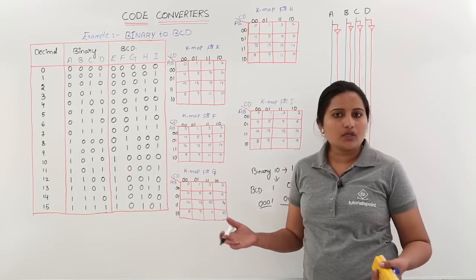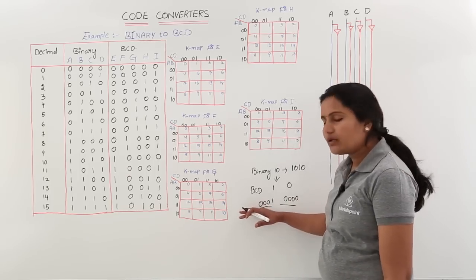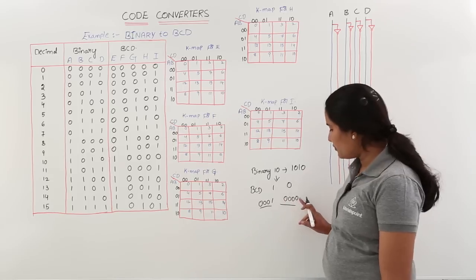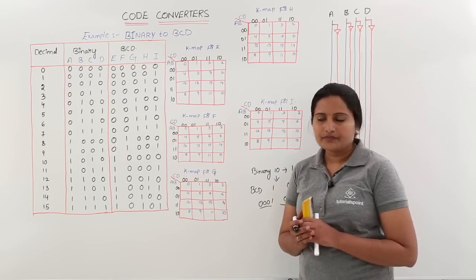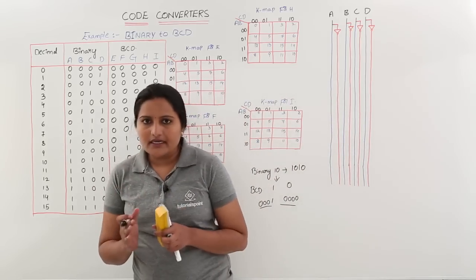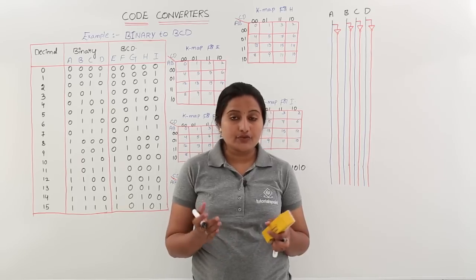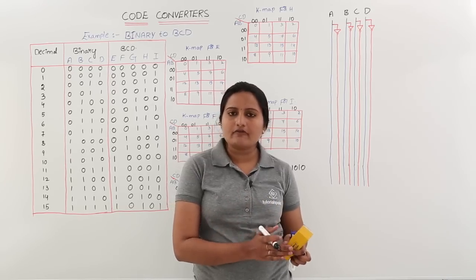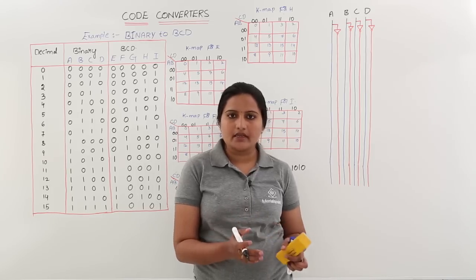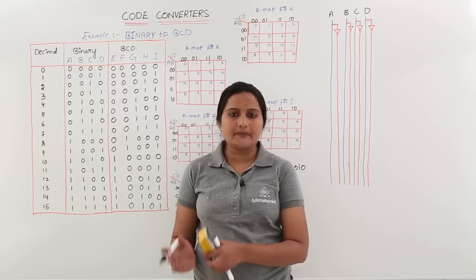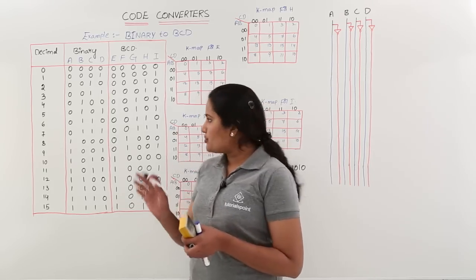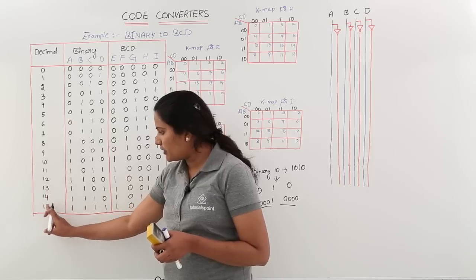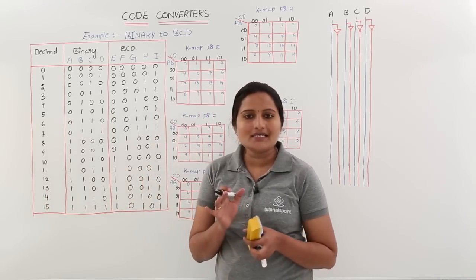So if anyone asks what is the BCD for 10, you represent 0001 for the digit 1 and 0000 for digit 0 to represent 10 in BCD code. Our intention is to create a converter which will convert binary to BCD code. The input of that particular converter is always binary and the output is BCD. To represent 2-digit decimal numbers like 10, 11, 12, 13, 14, 15, BCD requires at least 5 digits.